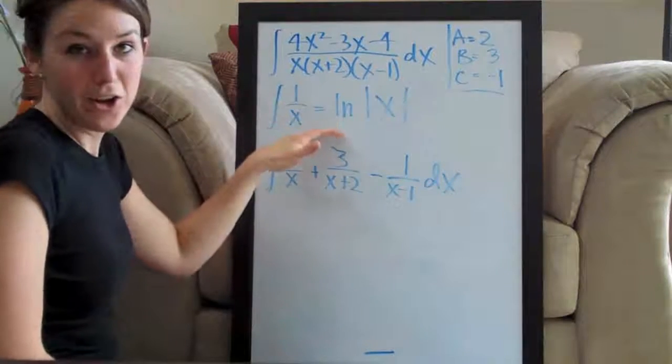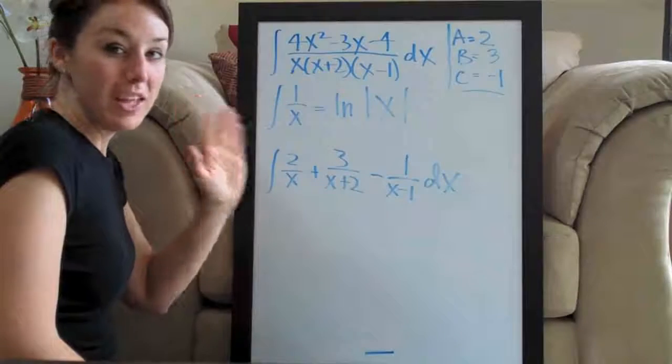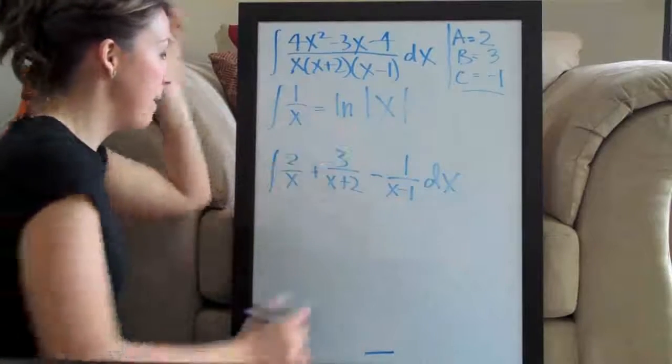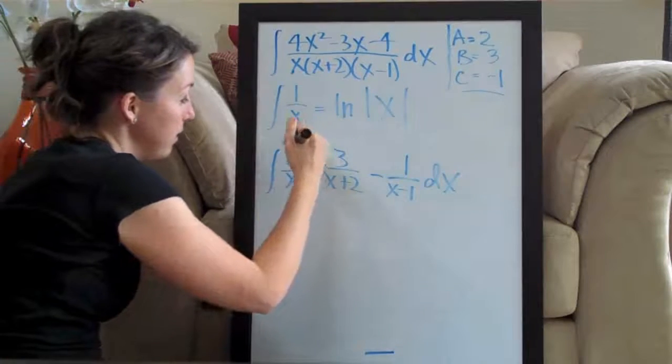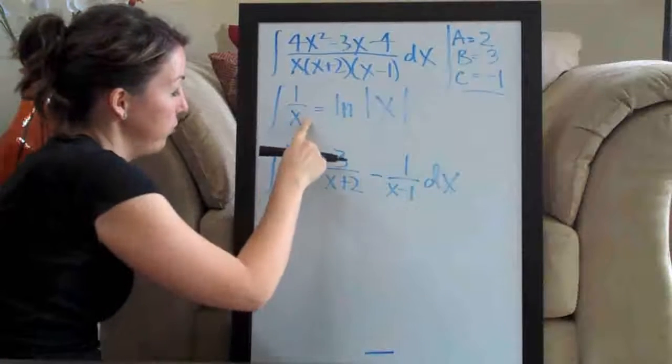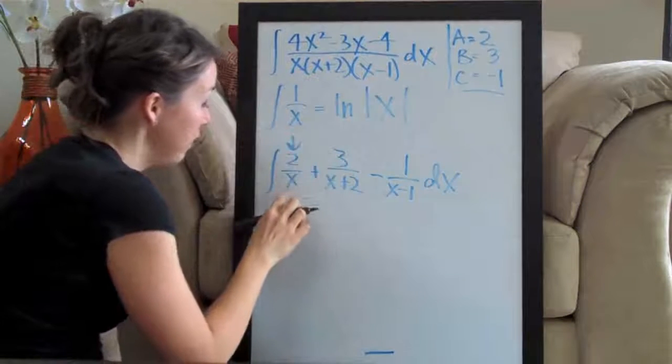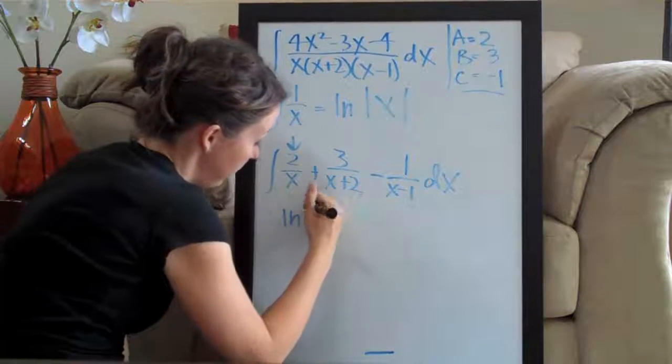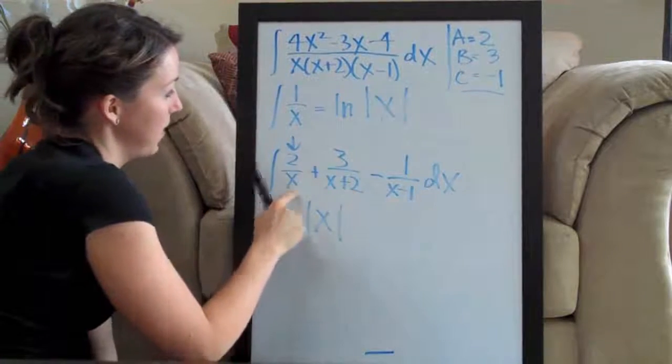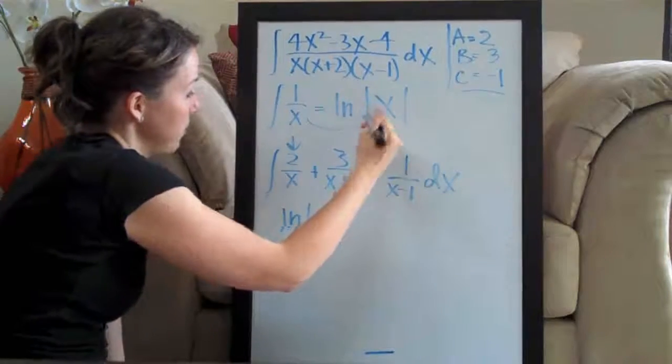You almost always end up using this formula in partial fraction problems. So, plug it into your calculator. Write it on a formula sheet. Even better yet, memorize it. But, we're going to go ahead and use this. So, you can see we've got something here that's very similar to this form. So, the integral of 2 over x is actually going to be ln of the absolute value of x, which makes sense, right? Because we've got that x on the bottom. This moves up here.